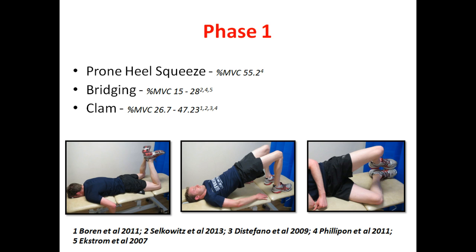Prone heel squeeze is a great exercise for activation where the patient lies on the stomach. The knees are flexed to roughly 90 degrees and slightly apart, and the patient is asked to squeeze the heels together as hard as they can. Next is the bridge, which is a great exercise for the glute max. One thing I've noticed in clinical practice is cramping of the hamstring, which could indicate that the hamstrings are overactive in hip extension. This can be corrected by moving the heels closer or by instructing the patient to push through the heels more. The last exercise in this group is the clam, which is normally done with hip flexion between 45 to 60 degrees.